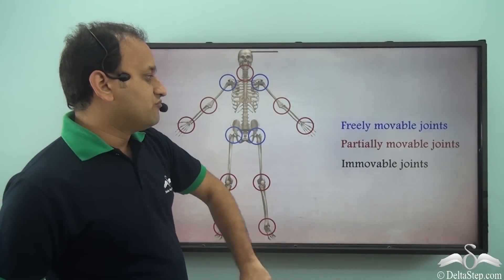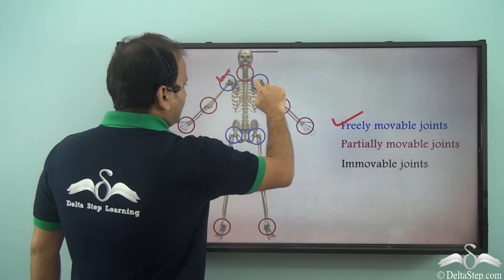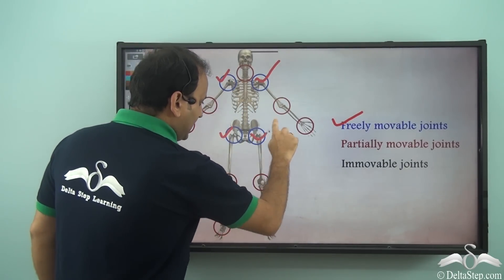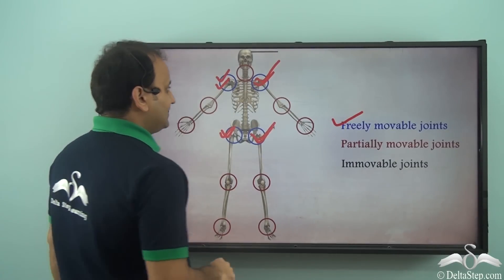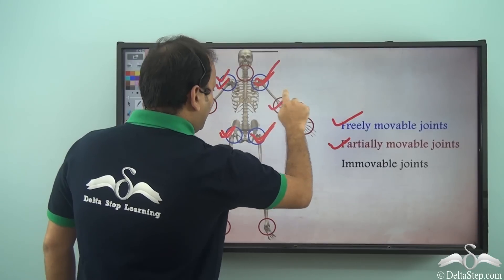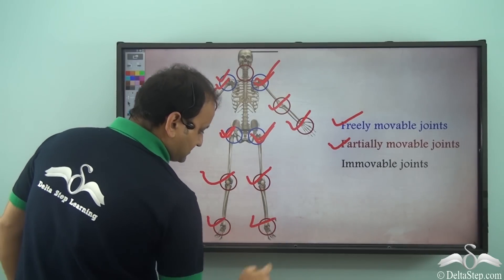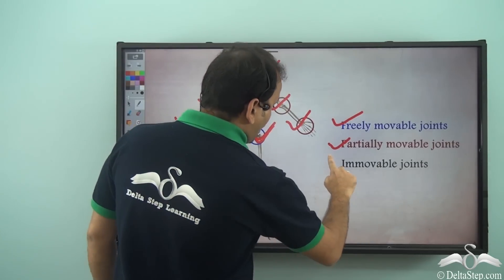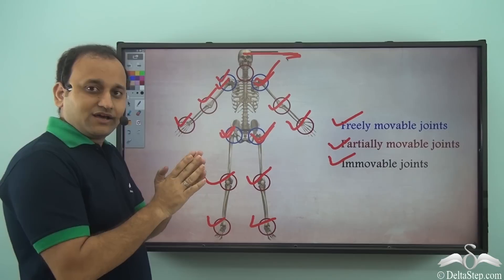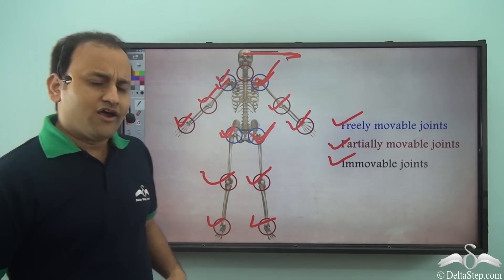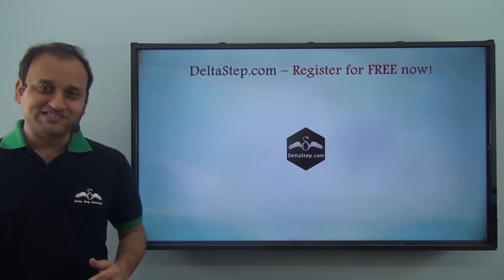If we talk about freely movable joints, partially movable joints, and immovable joints — the most common freely movable ones are the shoulder joints and the hip joints. Partially movable joints are at the wrists, elbow, knees, and even ankles. Immovable joints are in our skull — fixed together, not moving. Together they are all very important joints in our body which allow our movement, which is very important for our survival.